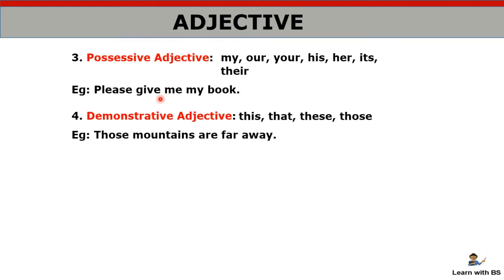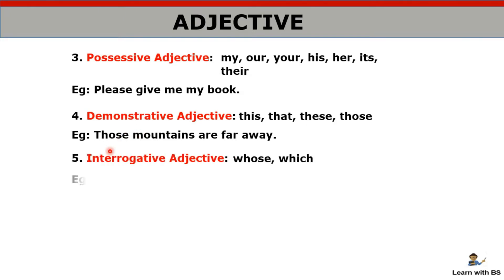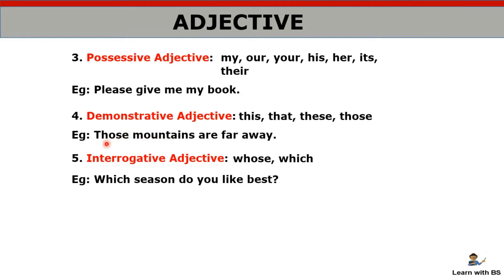Demonstrative adjective: this, that, these, those. After these words, a noun will always follow. I told you demonstrative pronoun also exists — but if after 'this' or 'that' a noun comes, it is an adjective; if a verb or something else comes, it is a pronoun. Interrogative adjective — again there will be a question mark at the end. The difference between interrogative adjective and interrogative pronoun is: 'Which season do you like the best?' — 'which' is followed by noun 'season', so it is giving more information about the noun — therefore it is an adjective.